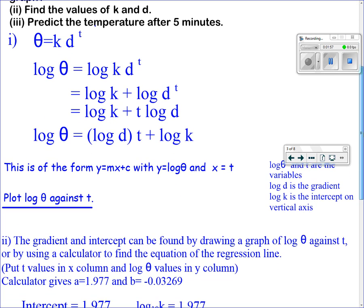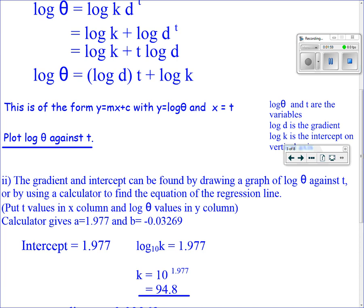Your calculator will give you a = 1.977 and b = -0.03269. The equation y = a + bx will have a for the intercept and b for the gradient.